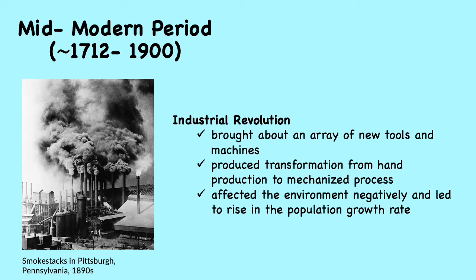It has been said that the Industrial Revolution was the most profound revolution in human history because of its sweeping impact on people's daily lives. During the Industrial Revolution, the pace of change appeared to speed up. This acceleration in the processes of technical innovation brought about an array of new tools and machines. It also involved more subtle practical improvements in various fields affecting labor, production, and resource use. However, the Industrial Revolution had a detrimental impact on the environment, and it also led to an unprecedented rise in the rate of population growth.